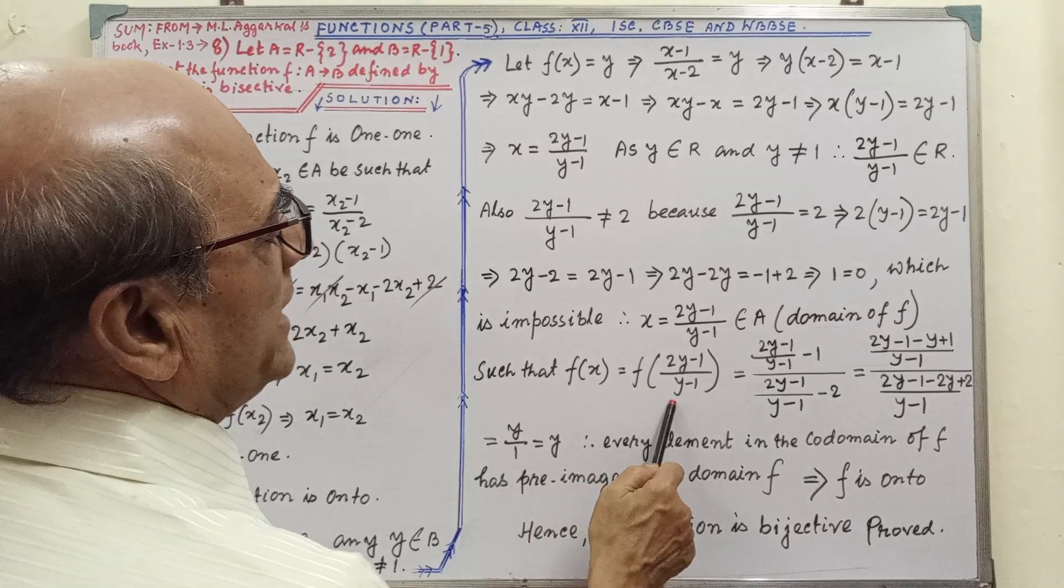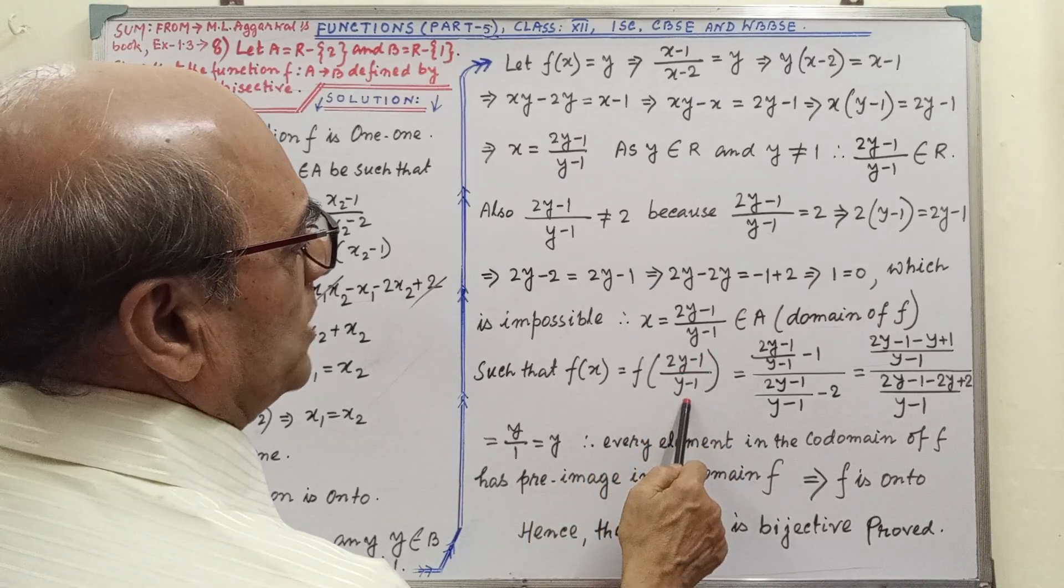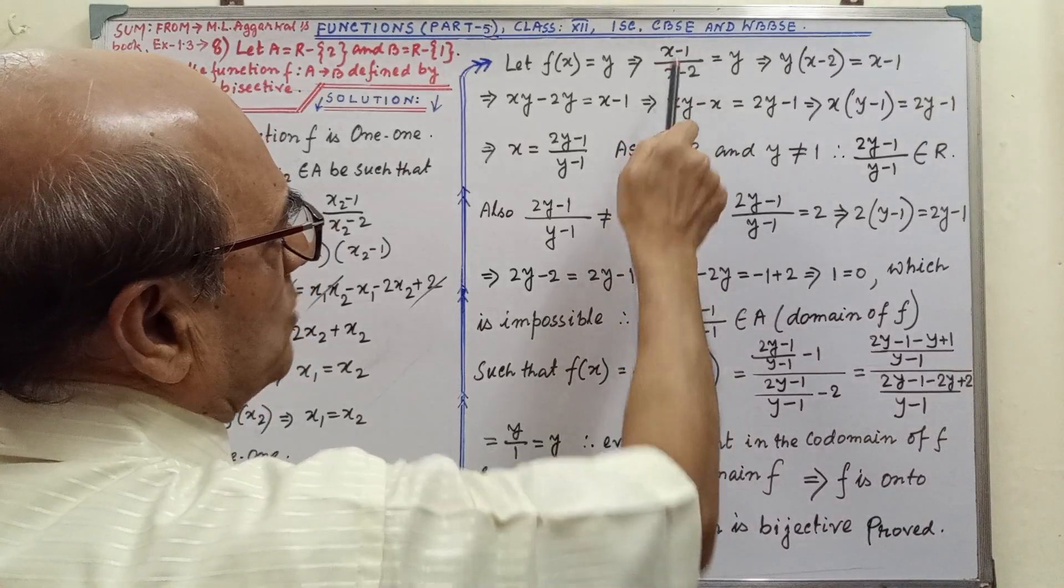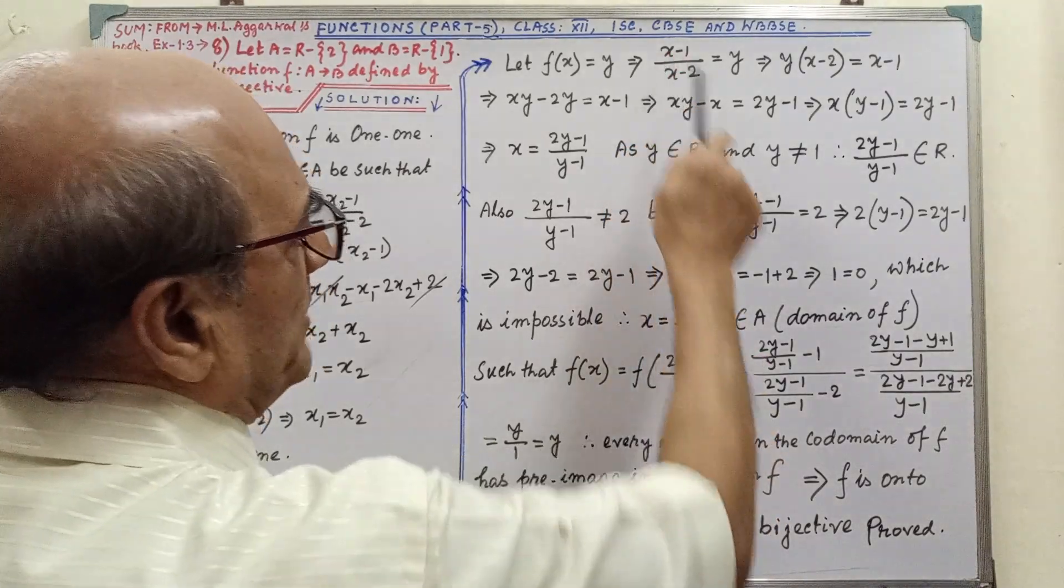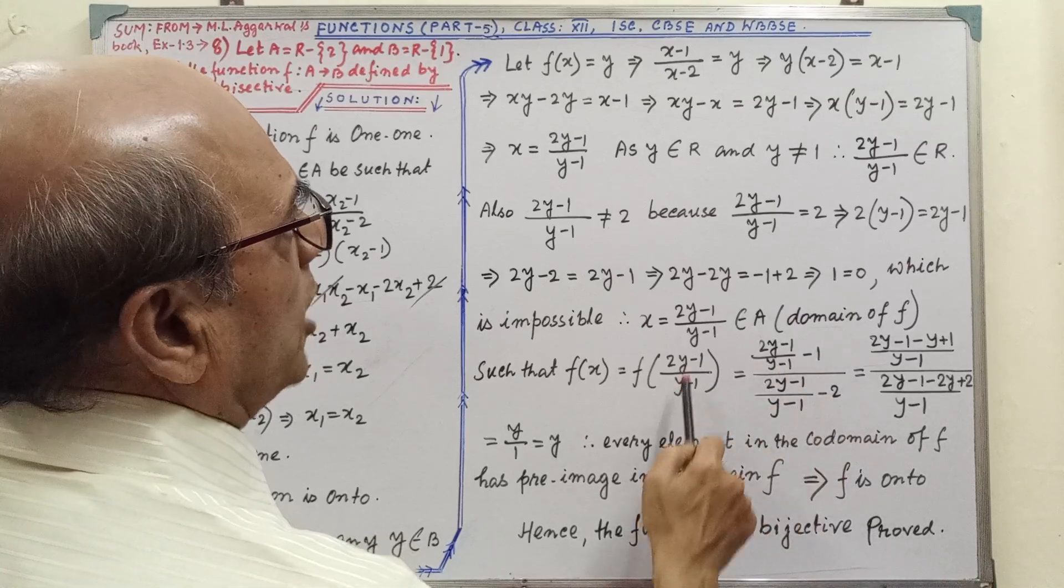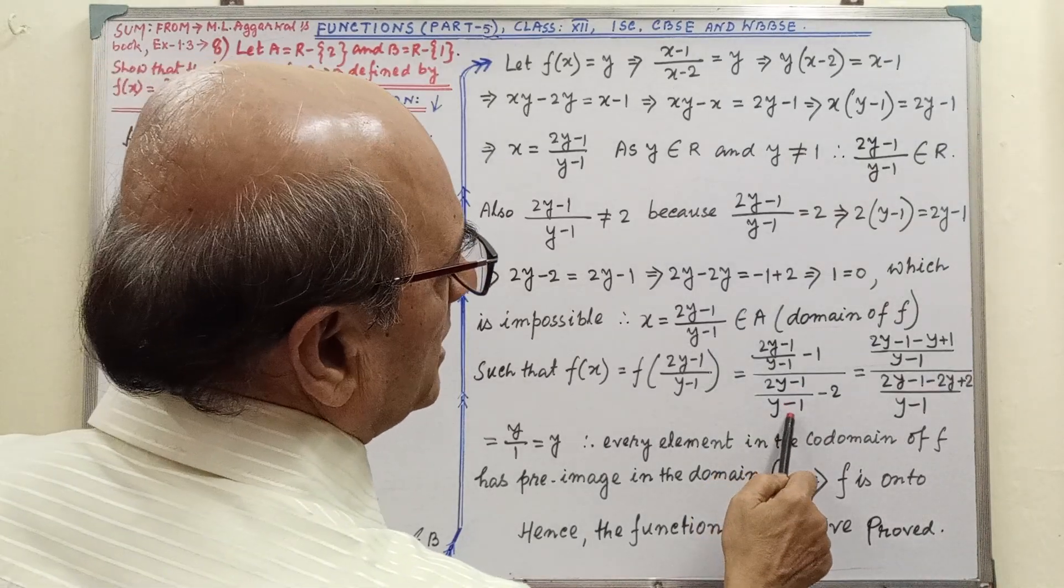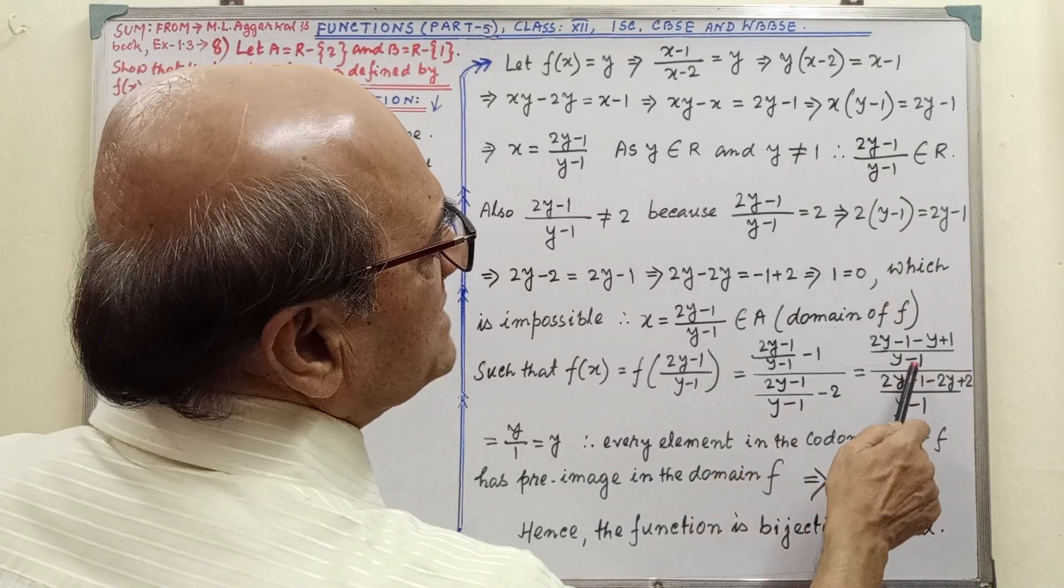such that F(X) equal to, in place of X we are putting 2Y minus 1 divided by Y minus 1. Here is X minus 1 by X minus 2, in place of X we are putting 2Y minus 1 by Y minus 1 minus 1. Here also in place of X we are putting 2Y minus 1 divided by Y minus 1. By simplification,